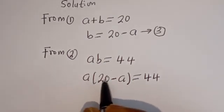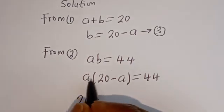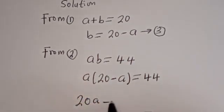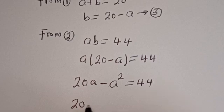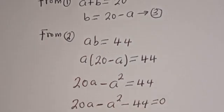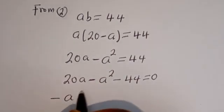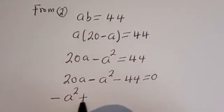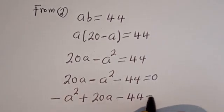Then let's open the bracket. A multiplied by 20 gives 20A, and A multiplied by minus A gives minus A squared, so we have 20A minus A squared is equal to 44. Rearranging: 20A minus A squared minus 44 is equal to 0.